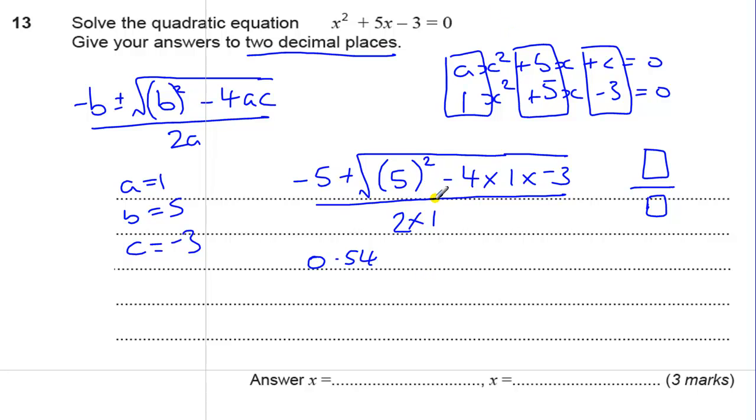And then all you've got to do is replace this plus with a minus. You could just go back with your arrows to this question and go through it and just change that plus to a minus. Or you could type it all out again. And you get the answer minus 5.54. And those are your two answers.